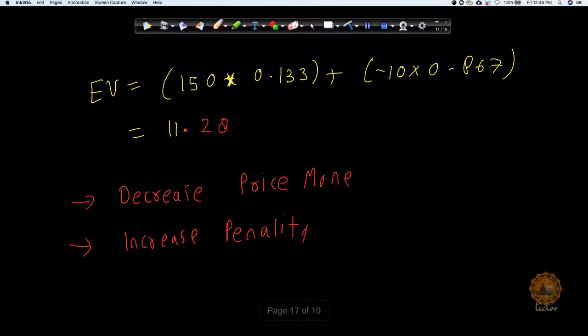Now what I'm gonna do, I'm gonna calculate my expected value now. So I'm gonna take 150 times 0.133 minus 10 times 0.867. If you do this calculation, I got 11.28, which means on average per game, per player can win 11.28 value.